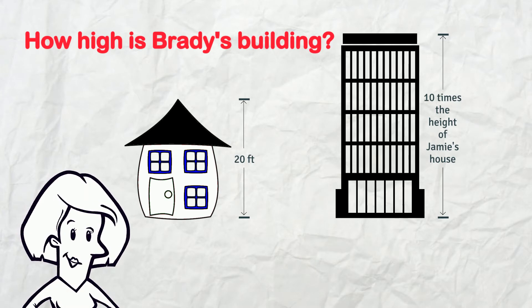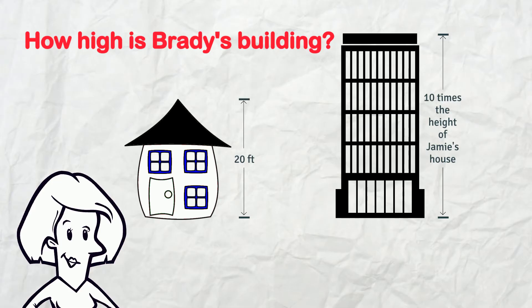To find the height of the apartment block we're going to multiply the height of Jamie's house which we know is 20 feet by 10!